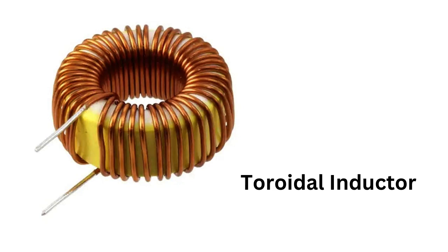A toroidal inductor is a type of inductor shaped like a toroid or donut. It is a passive electronic component that stores energy in a magnetic field when electric current flows through it. The toroid is typically made of a ferromagnetic material such as iron, nickel, or a combination of both. The core is wrapped with a copper wire, which creates the inductor. The number of turns of wire and the cross-sectional area of the core determine the inductance.